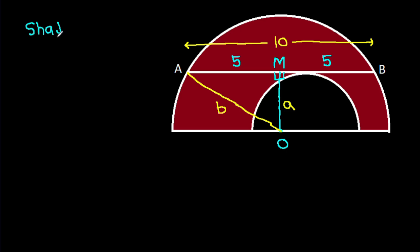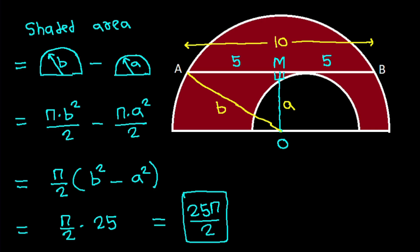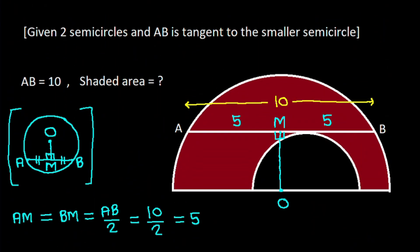Shaded area will be area of semicircle with radius b minus area of semicircle with radius a. That is pi times b squared over 2 minus pi times a squared over 2, which equals pi over 2 times b squared minus a squared. And it is pi over 2 times 25, that will be 25 pi over 2. So it is 25 pi over 2.